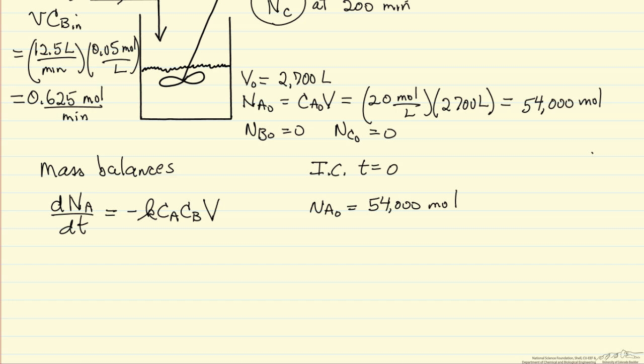The mass balance for B: B is not reacting, it's a catalyst, so the only reason the number of moles of B changes is because we're flowing B into the reactor. And of course NB0 is equal to 0.